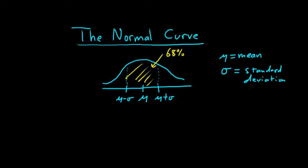If you do it twice — if you add sigma twice — that would put you at mu plus 2 sigma, and over here at mu minus 2 sigma. In this case you'd have this region here, and about 95% of the curve is in that region.